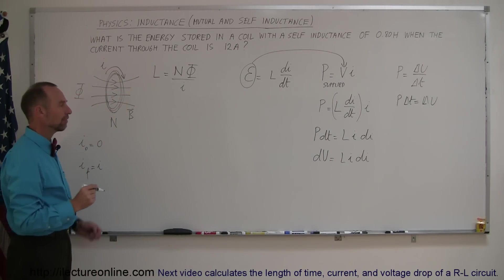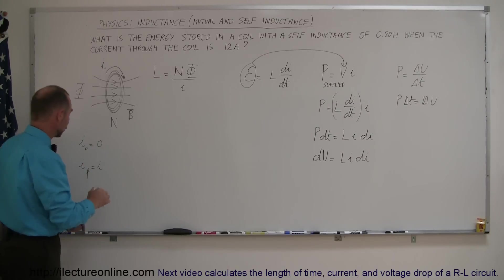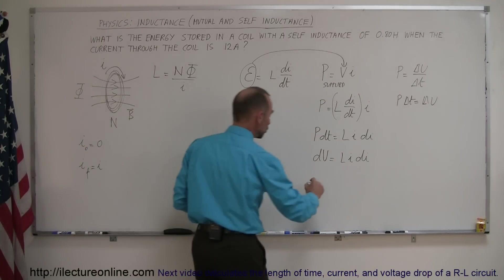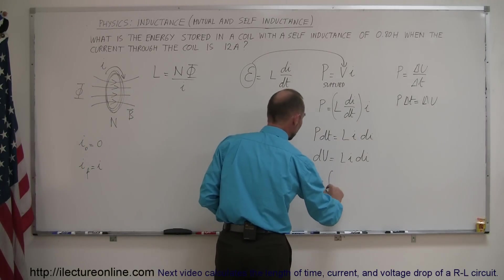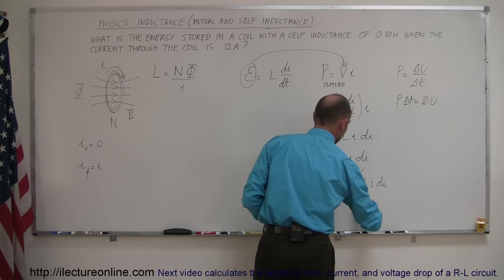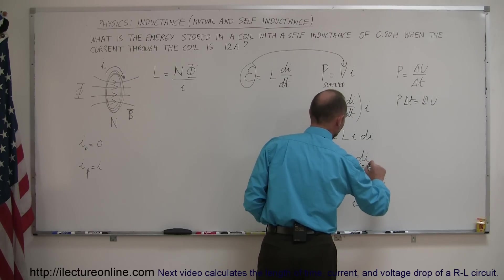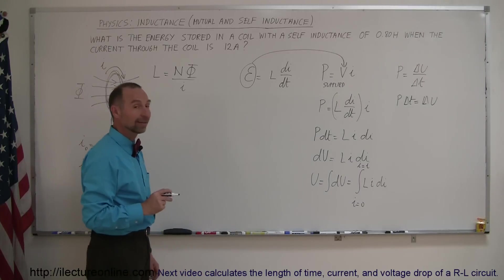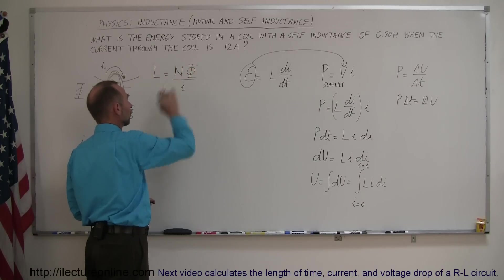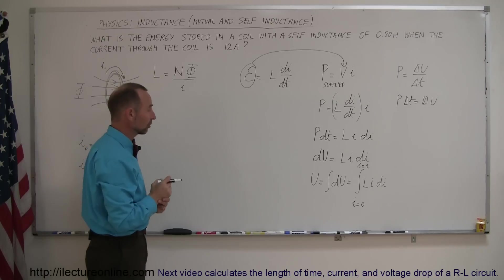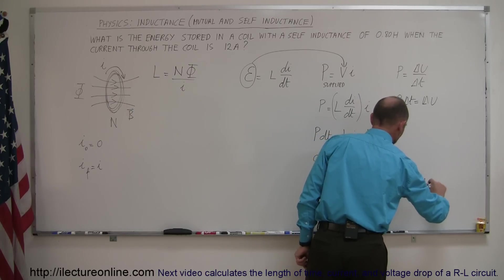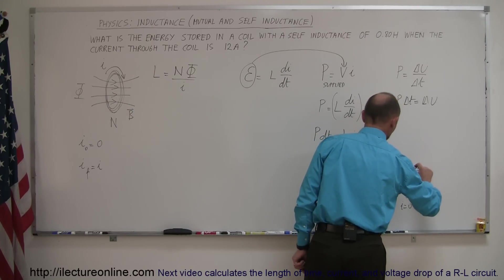If we want to find the total energy stored, we allow the current to go from I equals zero to I equals final I. During that process we build up the energy, which means that U is simply the integral of all the little DUs, which is equal to the integral of L times I times DI from I equals zero to I equals final I. Since L is a constant — it's the self-inductance associated with the number of turns and the flux through the coil — this is equal to L times the integral of I times DI from zero to the final current.